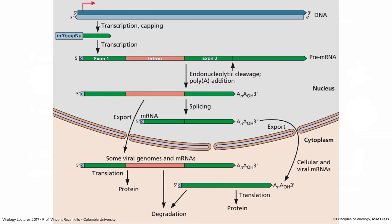Splicing tells the cell that this mRNA should be exported. There's a mechanism in the nucleus so that unspliced messages don't get out — which is an interesting problem for viruses, because many viral mRNAs are not spliced. Some viral mRNAs come out without being spliced, and we'll discuss how that happens. The vast majority of mRNAs are spliced, exported to the cytoplasm, and translated to make proteins.